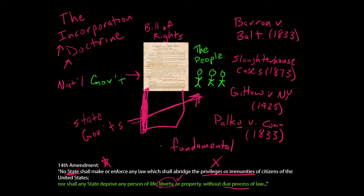This raises the question: what rights are fundamental? The Court said only those rights that are essential to a fundamental scheme of ordered liberty. Double jeopardy is not. The Court said it would not list all the fundamental rights right then — they would let them come up case by case, right by right, and the Court would decide as they came up.